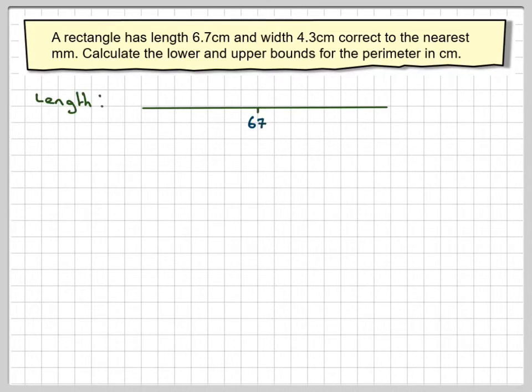If you put 6.7 centimeters on a number line, I've written it as 67 because I want it in millimeters. So the ones just before are 66 and the one just after is 68. So the midpoint here will be 66.5 millimeters and the midpoint here will be 67.5 millimeters. This is the lower bound and this will be the upper bound for the length. Converting it back into centimeters, that will be 6.65 centimeters to 6.75 centimeters.